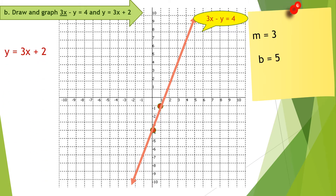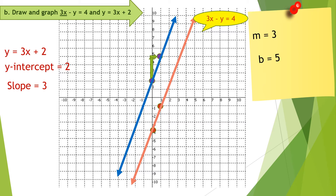The second equation is y equals 3x plus 2. The y-intercept is 2, so let us plot positive 2. Let us find the second point using the slope, which is 3. The change in y is 3 and the change in x is 1. This is the graph of y equals 3x plus 2. Let us take note of the y-intercept and the slope.